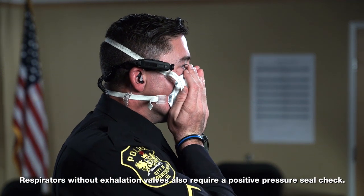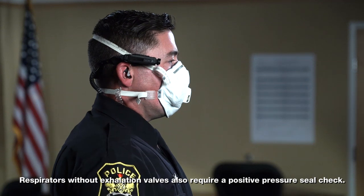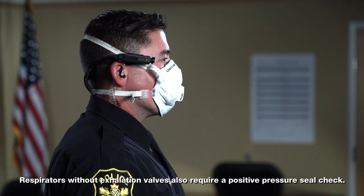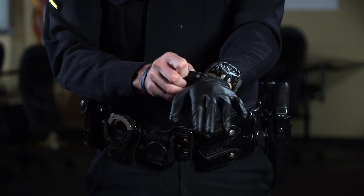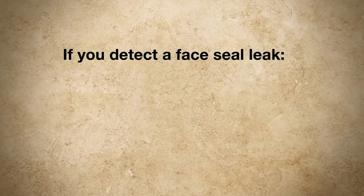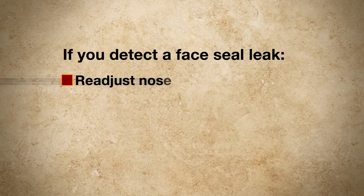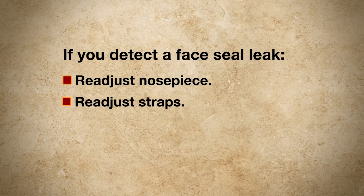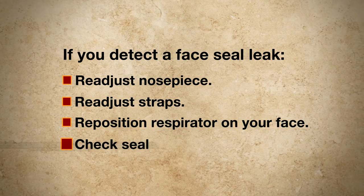Next, perform a negative pressure user seal check by placing both hands over the respirator and taking a quick breath in to see if the respirator collapses slightly. If you do not feel air leak between your face and the respirator seal, a proper seal has been made. Don the additional PPE that is required, such as your gloves, and proceed with your work. If you feel leakage between your face and the respirator seal, there is not a proper seal. If air leaks around the nose, readjust the nose piece. If air leaks at the mask edges, readjust the straps and reposition the respirator on your face. After readjusting the respirator, you should check the seal again.